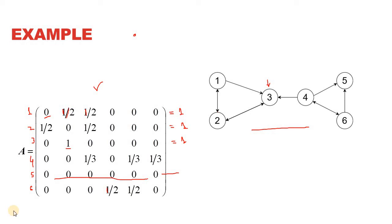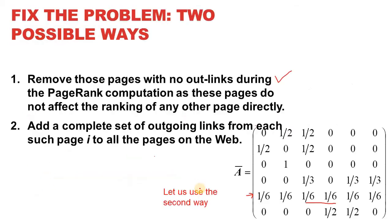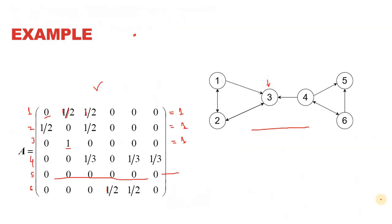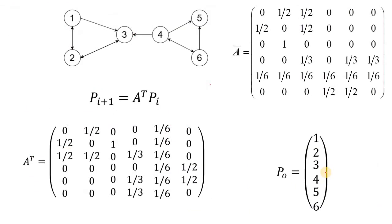Welcome again. This lecture is of particular importance because we are going to solve the PageRank algorithm for the sample network we have. To give you a quick recap, in the last lecture we generated matrix A from this network and resolved the issue of having a complete row with zeros by replacing the whole row with 1/6. Let's continue with how it's going to be solved.